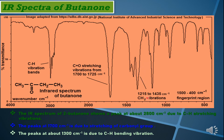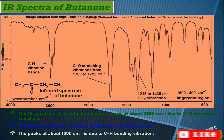We have the fingerprint region ranging from 1500 to 400 cm⁻¹. The methylene group vibrations are between 1215 cm⁻¹ and 1435 cm⁻¹, which is somewhat characteristic of the methylene group. After this is the fingerprinting region which is specifically related to butanone.